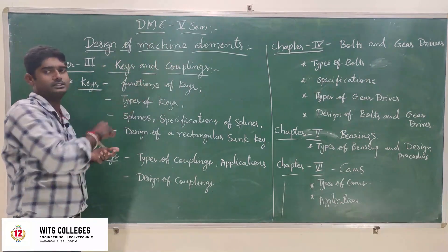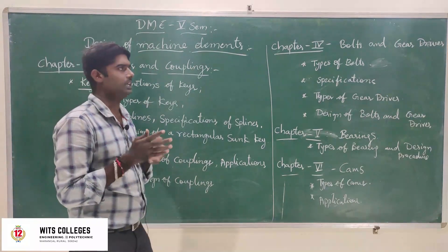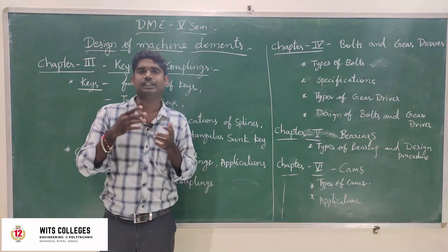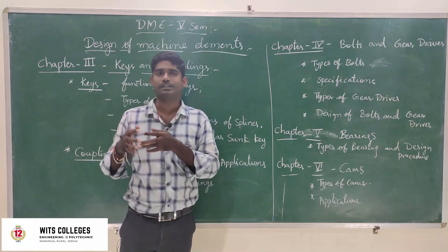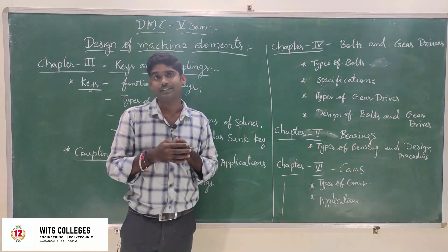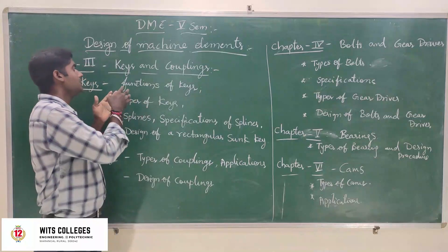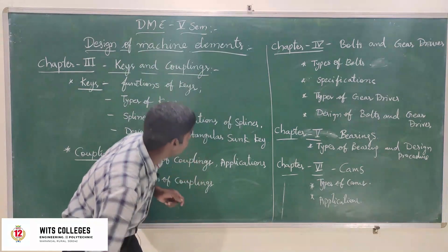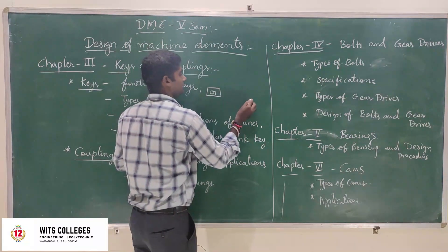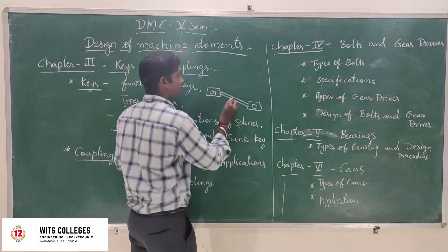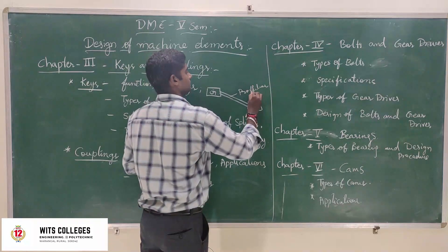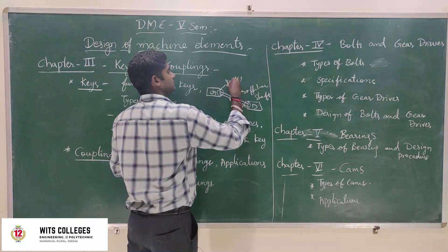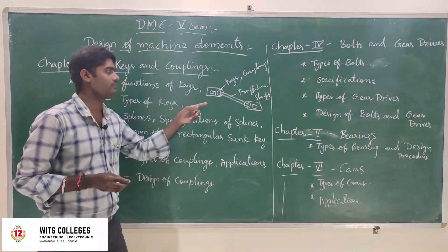Chapter 3 is Keys and Couplings. If you are connecting one shaft — for example, gearbox to differential — we use the propeller shaft. To connect the propeller shaft, we use keys and couplings as mediators between the gearbox and differential. Connecting these two ends, we use keys and couplings.